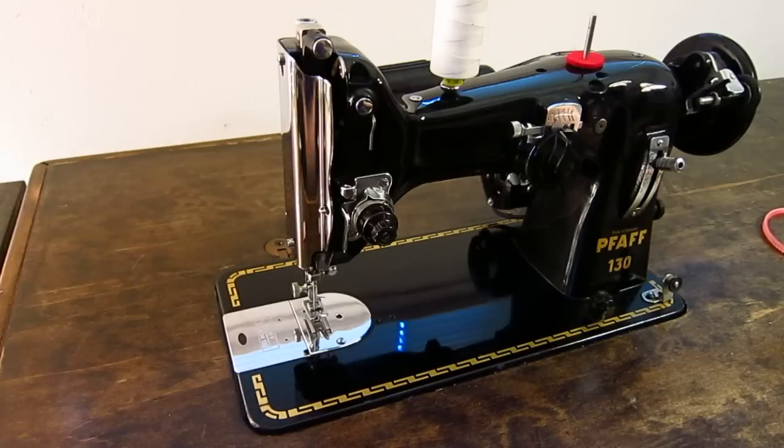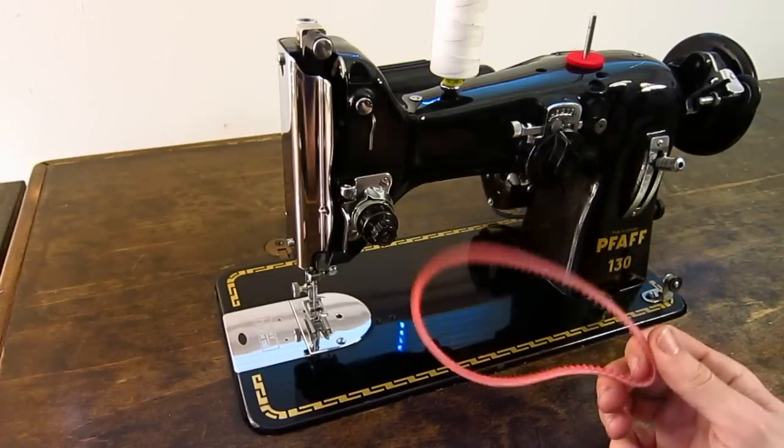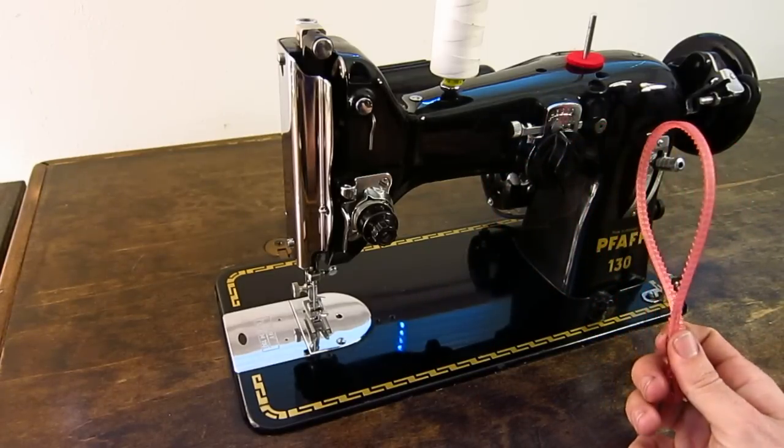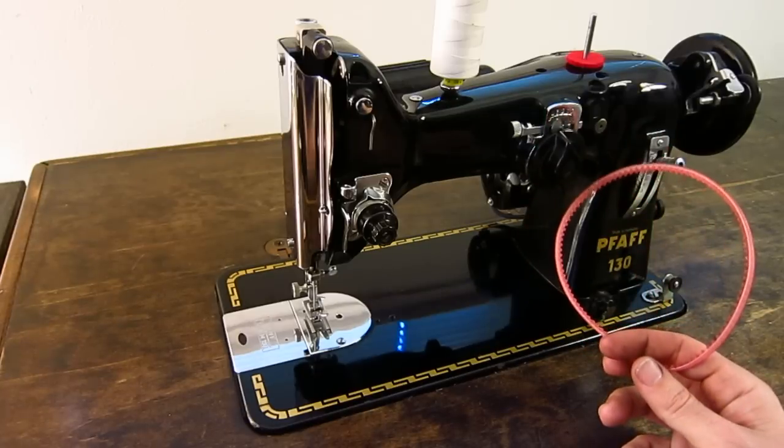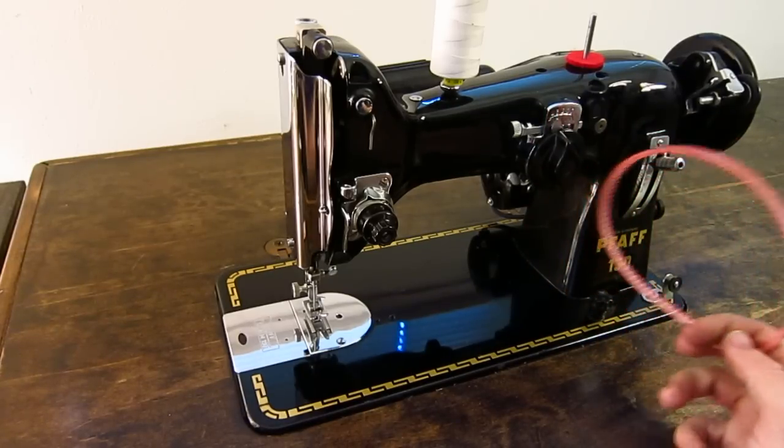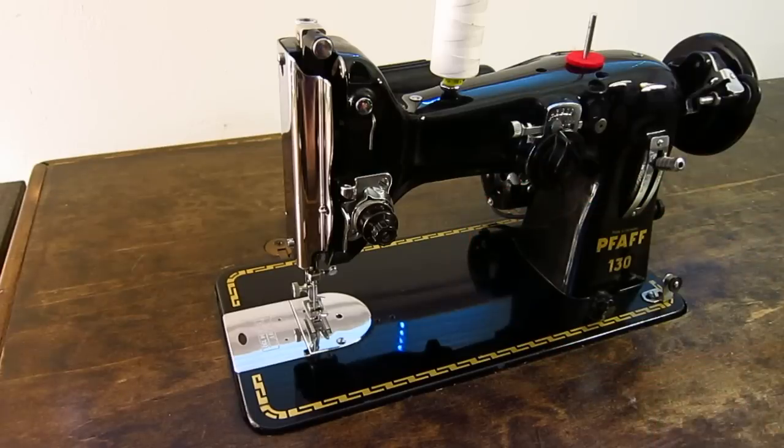So the original belt's still on there, but I do have plenty of replacements. Here's one of them. I just don't particularly like the look of this on this vintage machine. I feel like it's kind of an eyesore, but I'll include it.